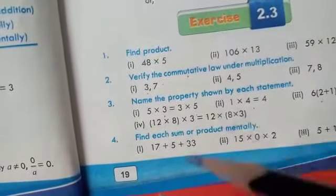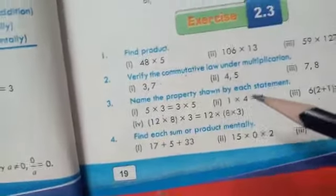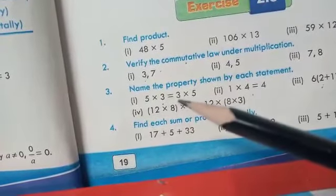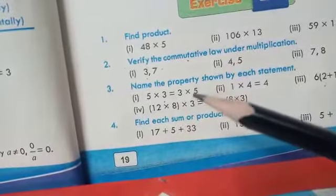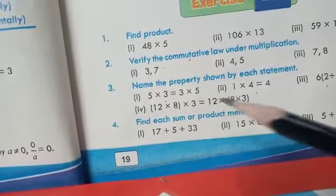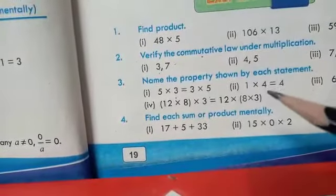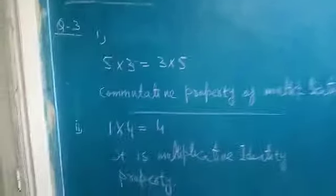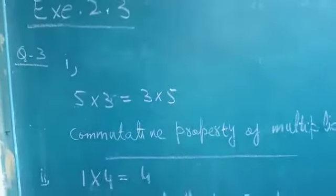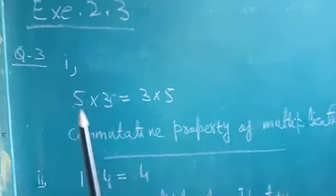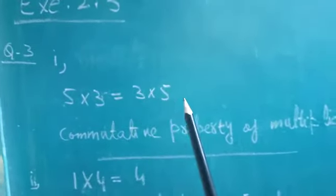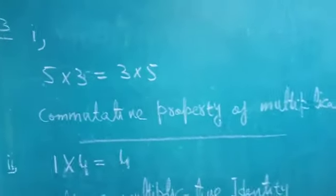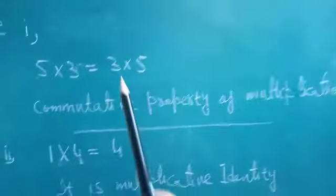Question number 3: Name the property shown by each statement. Here you have to write the property name that every statement is telling you. Look at here: 5 into 3 is equal to 3 into 5. Now which property is this? A into B is equal to B into A — these are two digits, so this is the commutative property of multiplication.